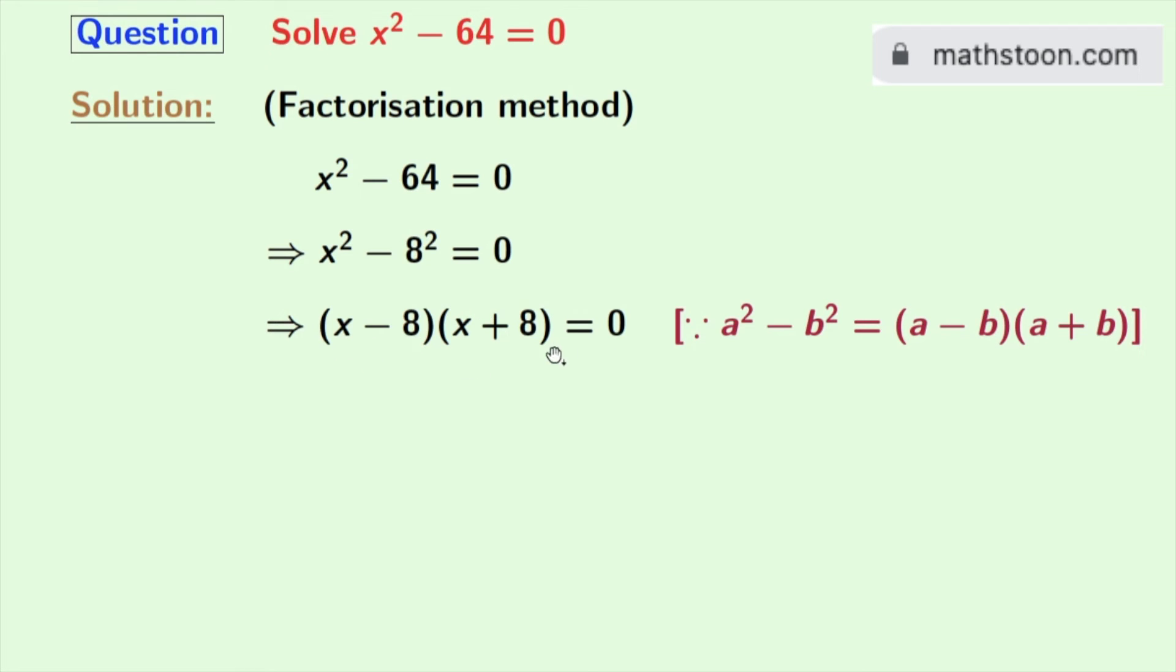Now please recall that if the product of two numbers is equal to zero, then either x minus 8 is 0 or x plus 8 is 0. When x minus 8 is 0 then x will be 8, and when x plus 8 is 0 then x will be minus 8. So we get x is equal to 8 and minus 8, and these are the solutions of the equation x² minus 64 is equal to 0.